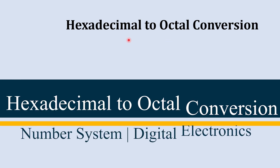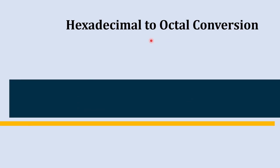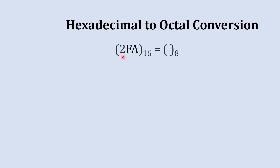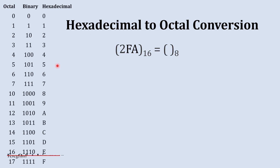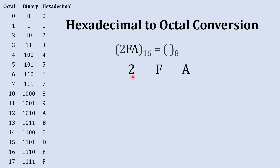Now let's move ahead — the next conversion is hexadecimal to octal. Here we have a hexadecimal number which we are going to convert into an octal number, and to achieve this we are going to use the same octal to hexadecimal conversion table.